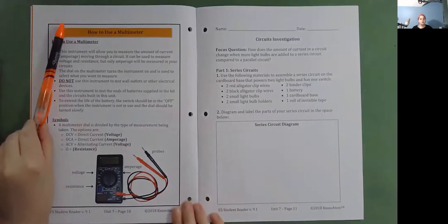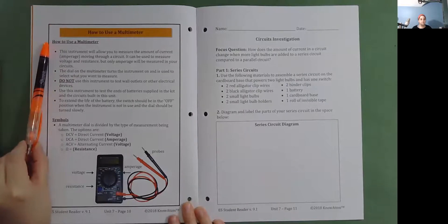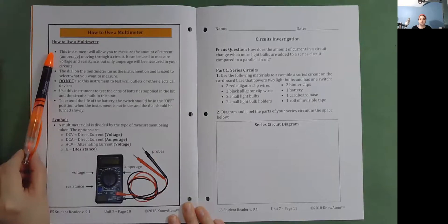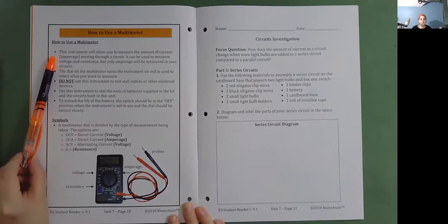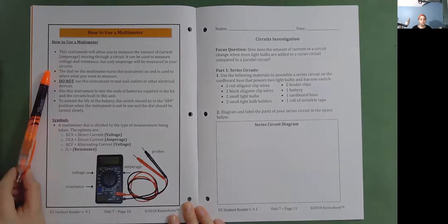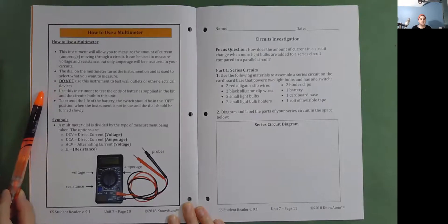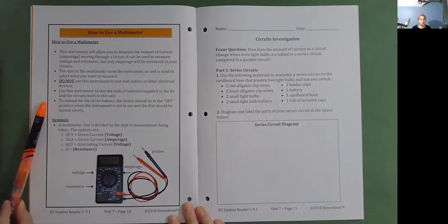How to use a multimeter. This instrument will allow you to measure the amount of current or amperage moving through a circuit. It can be used to measure voltage and resistance, but only amperage will be measured in your circuits. The dial on the multimeter turns the instrument on and is used to select what you want to measure. Do not use this instrument to test wall outlets or other electrical devices. Use this instrument to test the ends of batteries supplied in the kit and the circuits built in this unit. To extend the life of the battery, the switch should be in the off position when the instrument is not in use and the dial should be turned slowly.